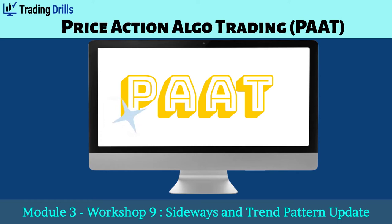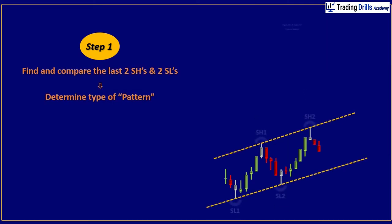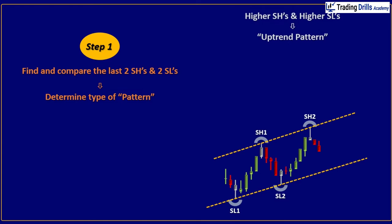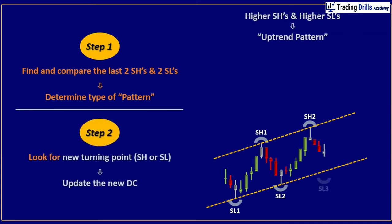This is a simple two-step process. In step 1, find and compare the last two swing highs and two swing lows and determine the current type of pattern. In step 2, look for a new turning point and update the new dynamic channel.